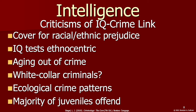Another criticism is that intelligence does not explain changes and patterns in crime. Individuals tend to age out of crime as they get older — can this be explained just by getting smarter over time? This applies only to street crime. Are those who commit white-collar and corporate crime of lower intelligence, too? Certainly, many of these crimes require at least some level of higher intelligence to pull off. What about ecological crime patterns? Does intelligence fluctuate based on the weather, time of year, time of day, and geographic location? And finally, self-report studies consistently find that the vast majority — upwards of 90% of juveniles — commit some type of criminal offense at some point. Do all of these youths have low IQs, or is it just those who are caught?